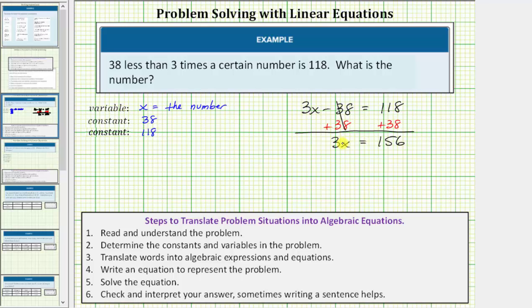And now to solve for x, because 3x means three times x, we undo this multiplication by dividing both sides by three. Simplifying, three divided by three is equal to one. One times x is x, so we have x equals 156 divided by three is equal to 52.